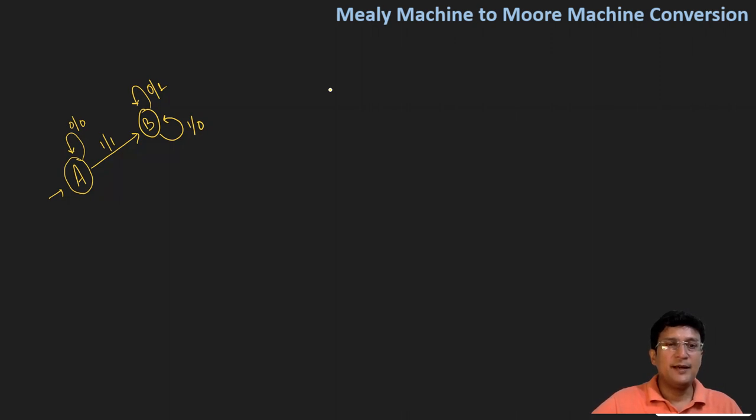We can see there is only one transition on state A. Whatever output is associated with this transition will be the output associated with the state. The notation 0/0 means 0 is the input and 0 is the output, so I associate this output 0 with state A.